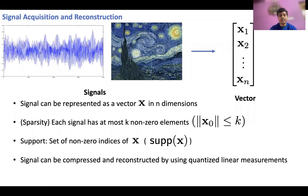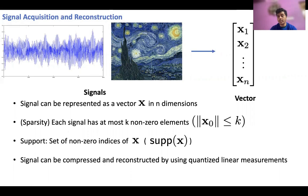So let's be a bit more mathematically rigorous. Suppose we have a signal vector which is n-dimensional, denoted by x, and we will assume that each signal is k-sparse. That is, it has at most k non-zero elements, i.e., the L0 norm of x is at most k. We will call the set of non-zero indices of the vector x the support and denote it by supp(x). Such sparse high-dimensional signals can be compressed and reconstructed using quantized linear measurements where the number of measurements is much smaller than n.